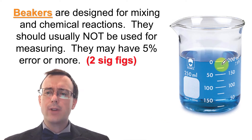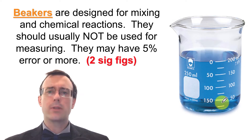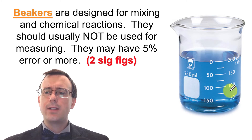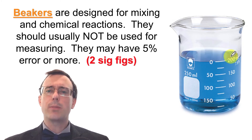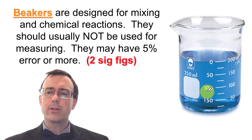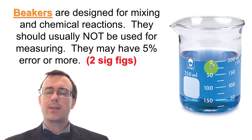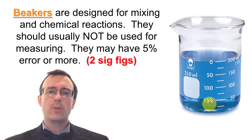A common question is: why do beakers and Erlenmeyer flasks have volume markings if they shouldn't be used for measuring volumes? The answer is that those markings are only a reference so you know the approximate volume during a chemical reaction or mixing. They're not to be used for actual volume measurement, only as a reference.